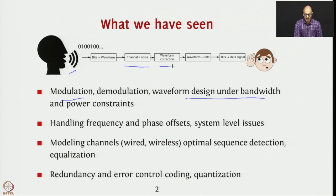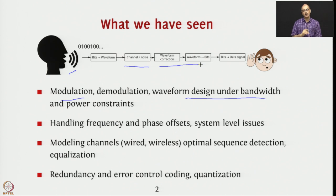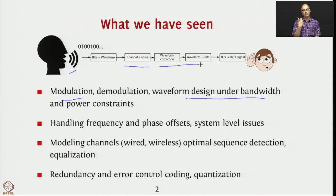We have seen waveform corrections and waveform to bits. In the context of waveform correction, we can either perform equalization, or directly detect the bits using maximum likelihood sequence estimation and optimal sequence detection. The key thing we have seen is how to handle the fact that there is a channel which causes some deformation — we can either correct that deformation or account for it and still get back our bits reliably.